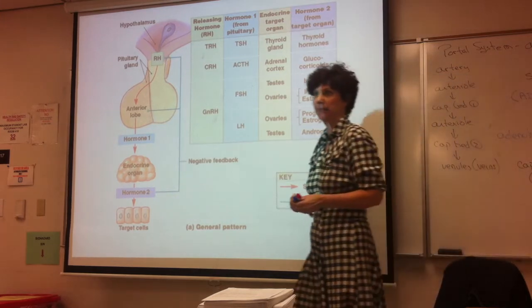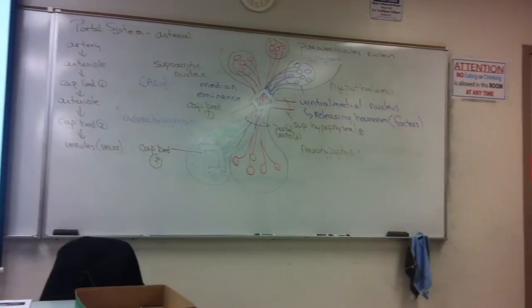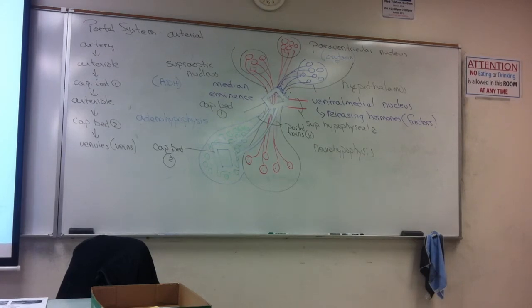Two things happened in capillary bed one: hormones from the body exited the capillary bed and went into the hypothalamus, and the releasing factors from the hypothalamus went into capillary bed one. They are carried down the portal veins to capillary bed two. There, those releasing hormones will leave capillary bed two and go into the anterior pituitary, and the hormones that anterior pituitary makes will go into capillary bed two to be carried to the rest of the body.